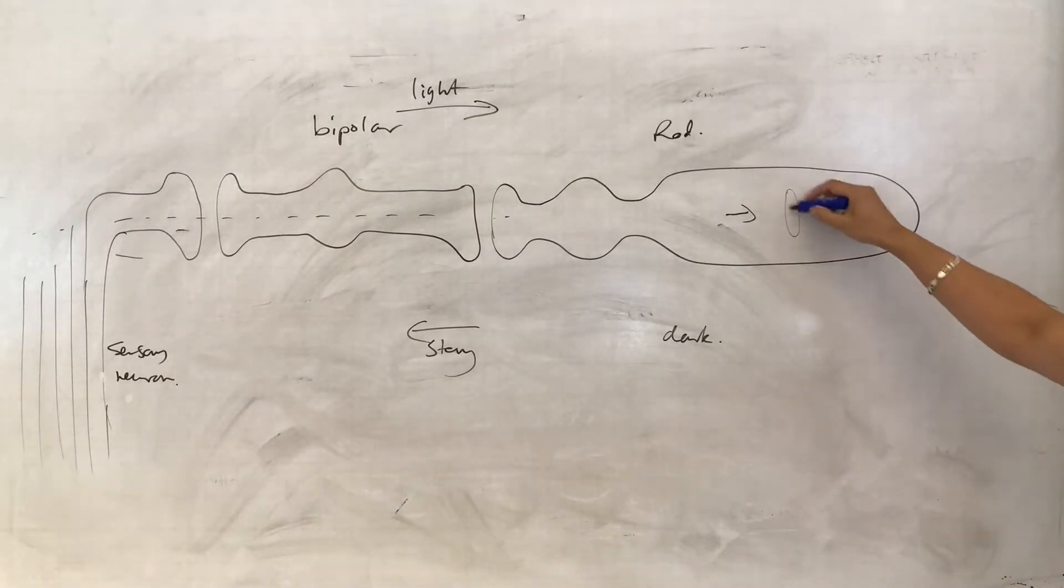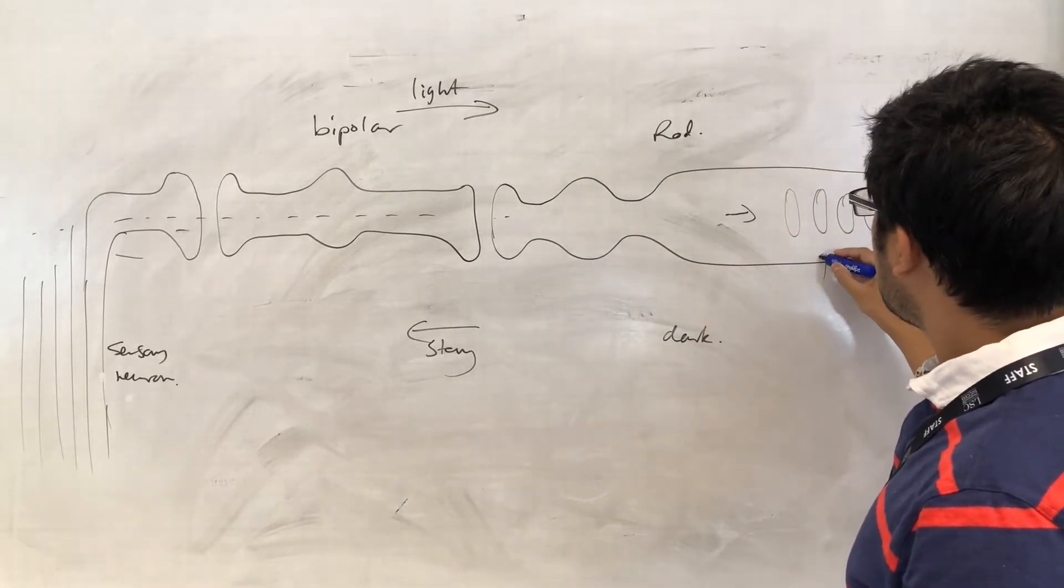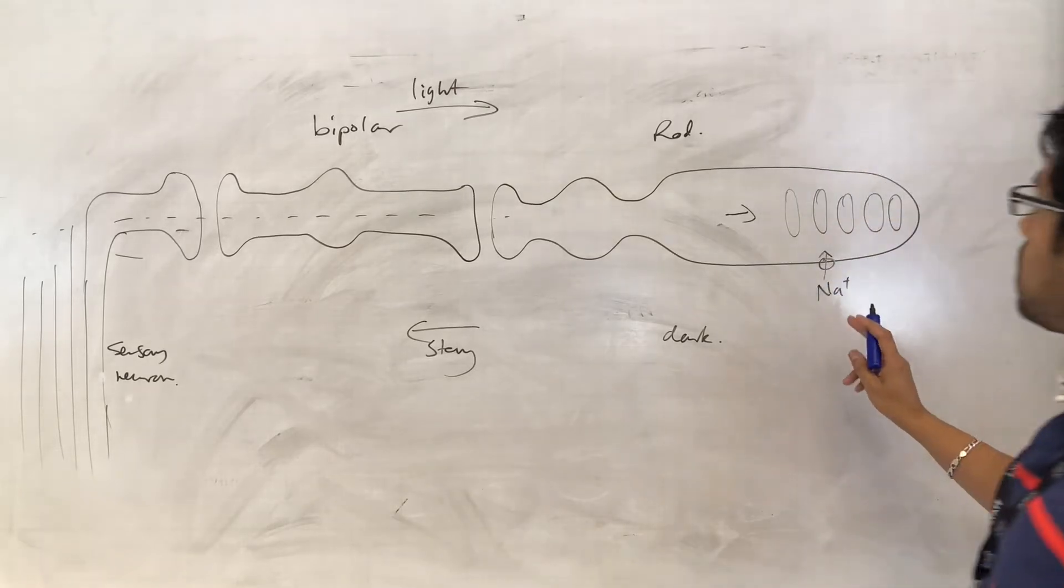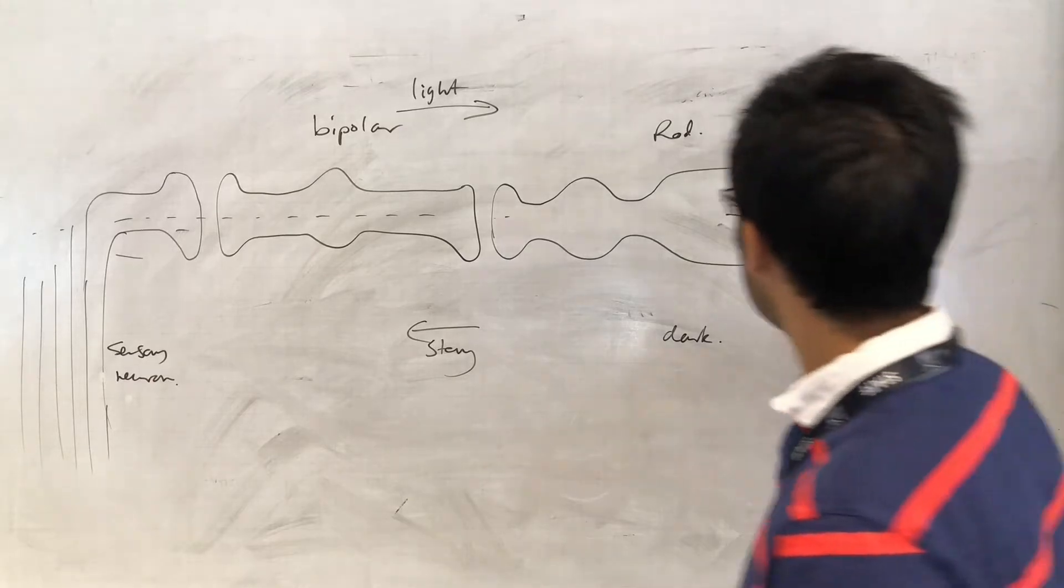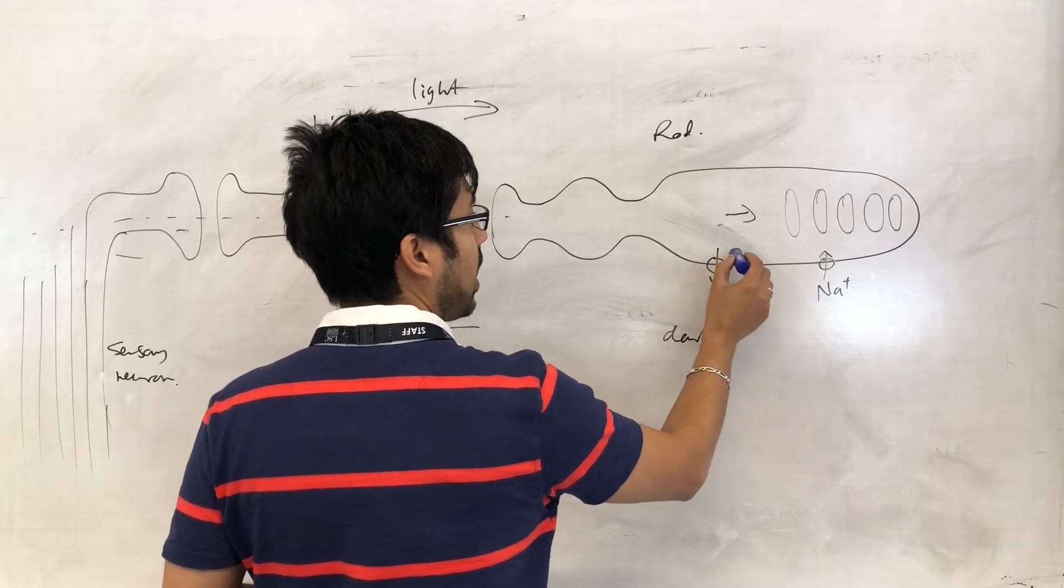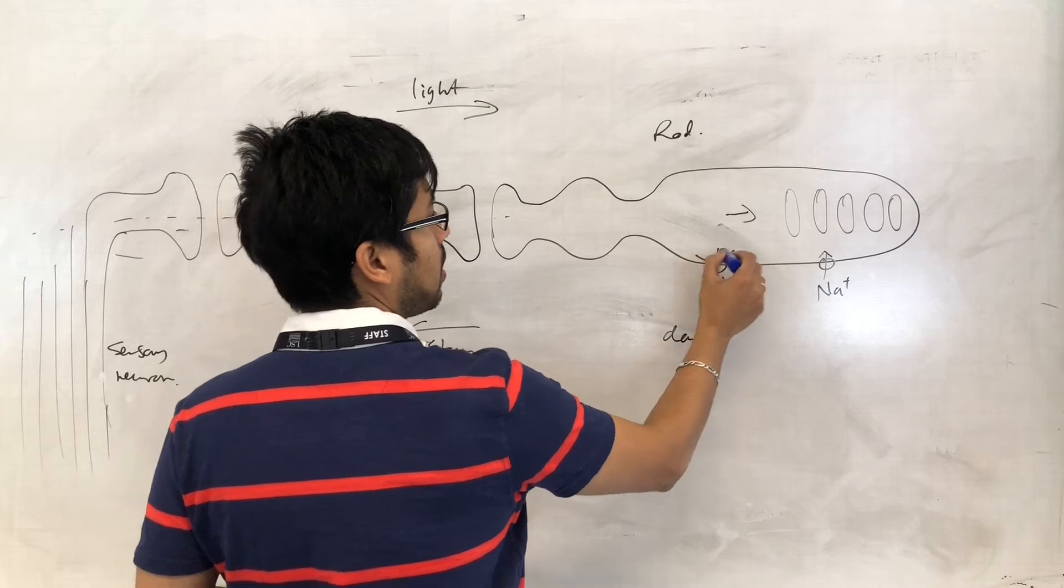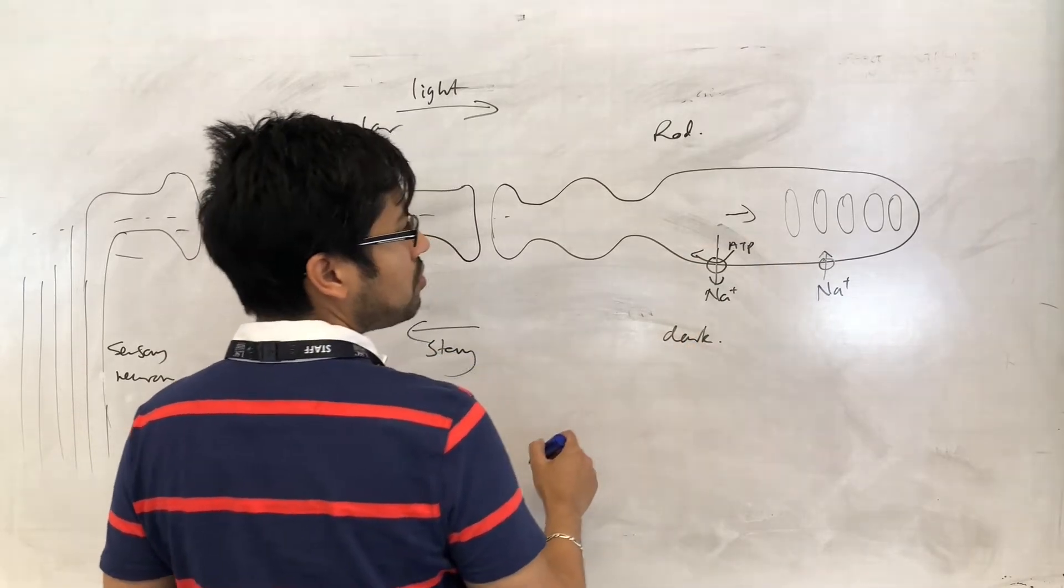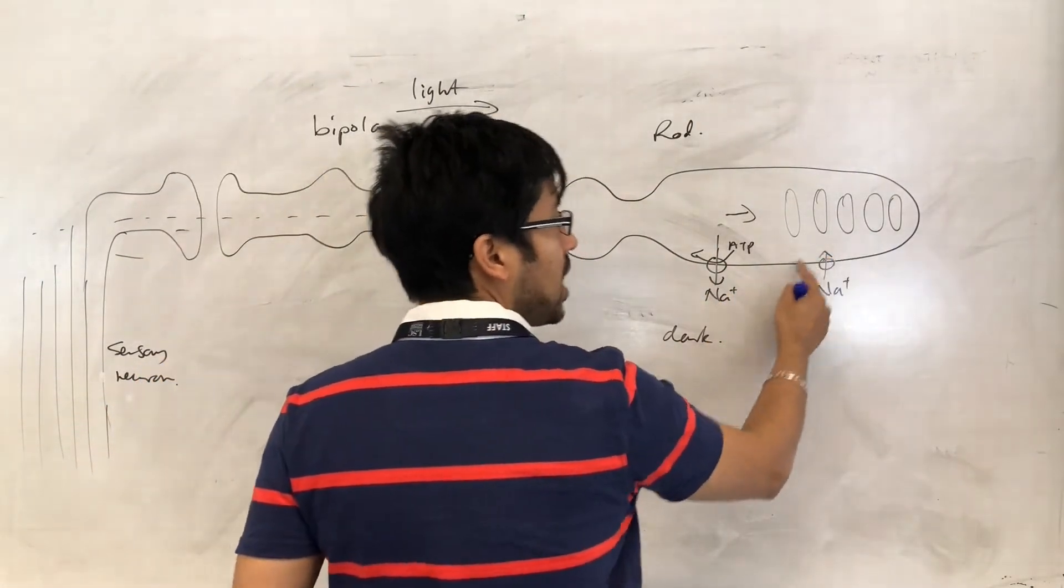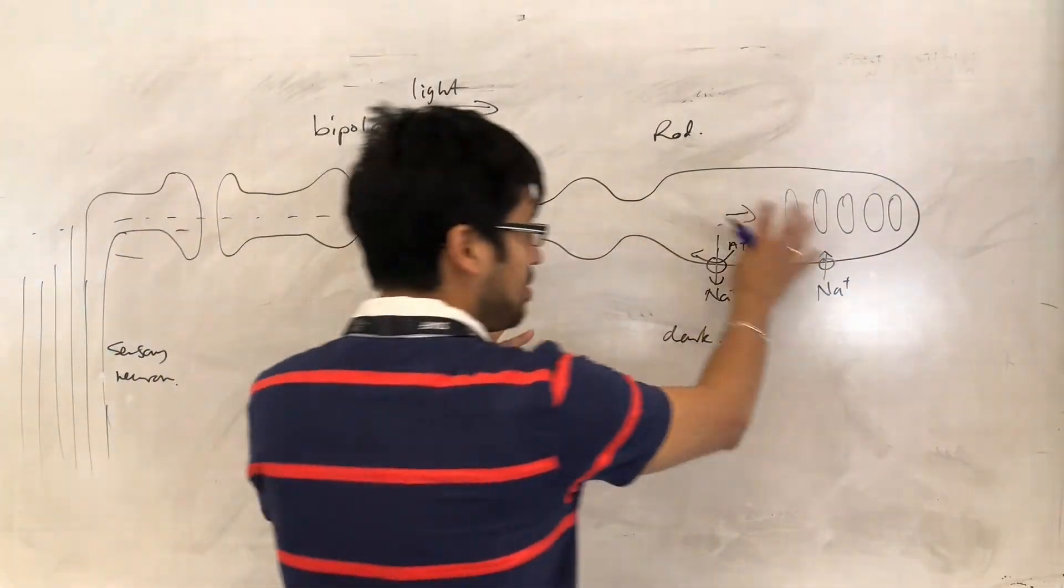You have sodium diffusing in here, into the cell, and it's being actively transported out here. So, ATP is used there, and sodium is being pumped out of here, but there's an open channel here that allows sodium to come back in. Now, because of this situation,